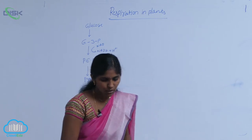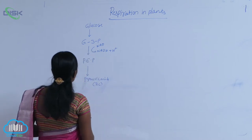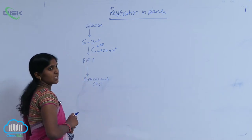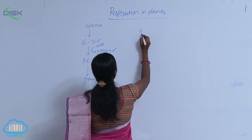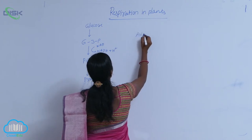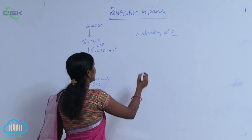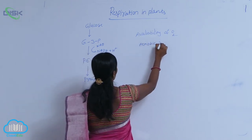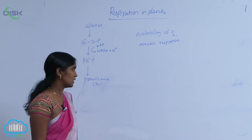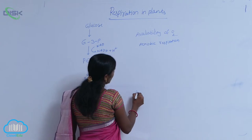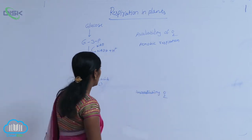Here the pyruvic acid is produced. After production of the pyruvic acid, if oxygen is available — oxygenated condition — they go for aerobic respiration. Aerobic respiration means they go for intermediate reactions. But in the absence of O2, they can go on to fermentation reactions.